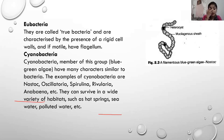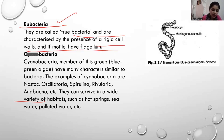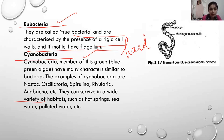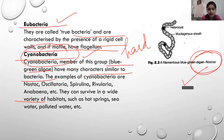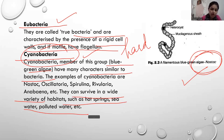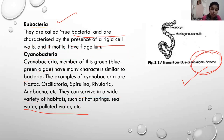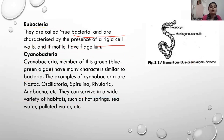Next we have Eubacteria — if we talk about eubacteria, these are called true bacteria because they have a proper, rigid, hard cell wall, and they also have flagella. Here we discuss cyanobacteria — it's a member of this group, which includes blue-green algae. This example is asked very often: Nostoc is a blue-green algae. Its characteristics are like bacteria, that's why it is placed in Kingdom Monera. Nostoc is a green algae but it's a bacteria because it shows the features of bacteria. They can survive in a wide variety of habitats — hot springs, sea water, polluted water. Examples of cyanobacteria include Oscillatoria, Spirulina, Rivularia, and Anabaena.